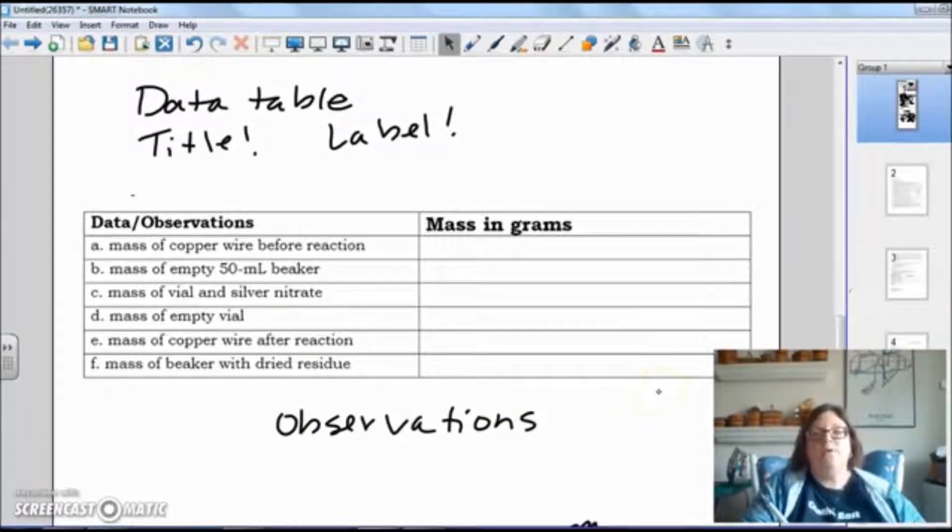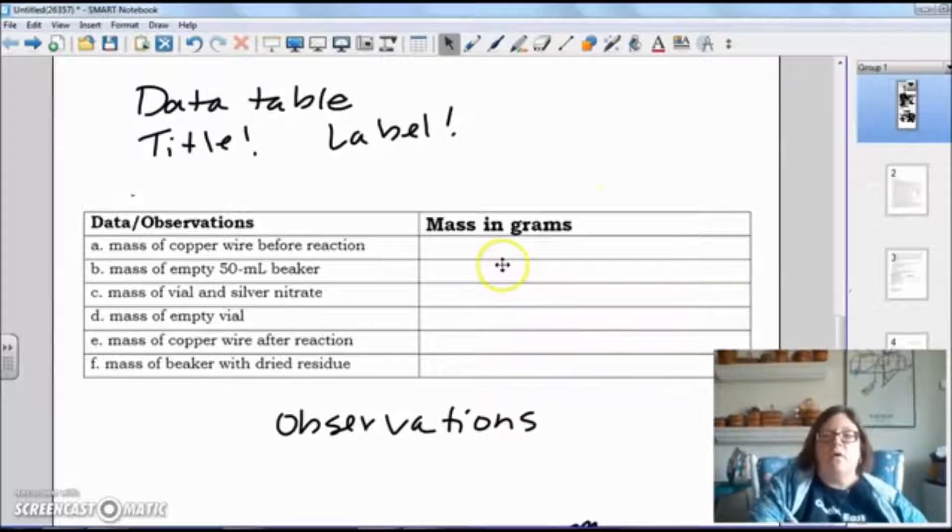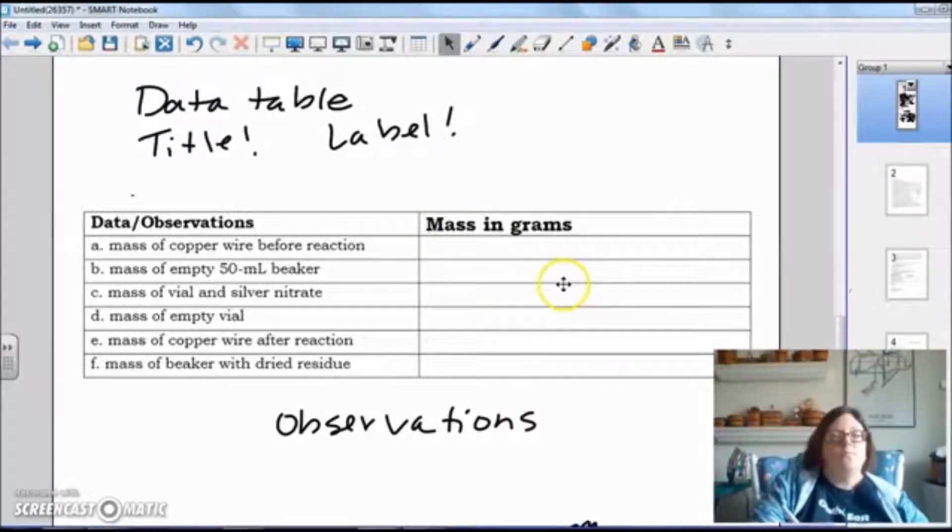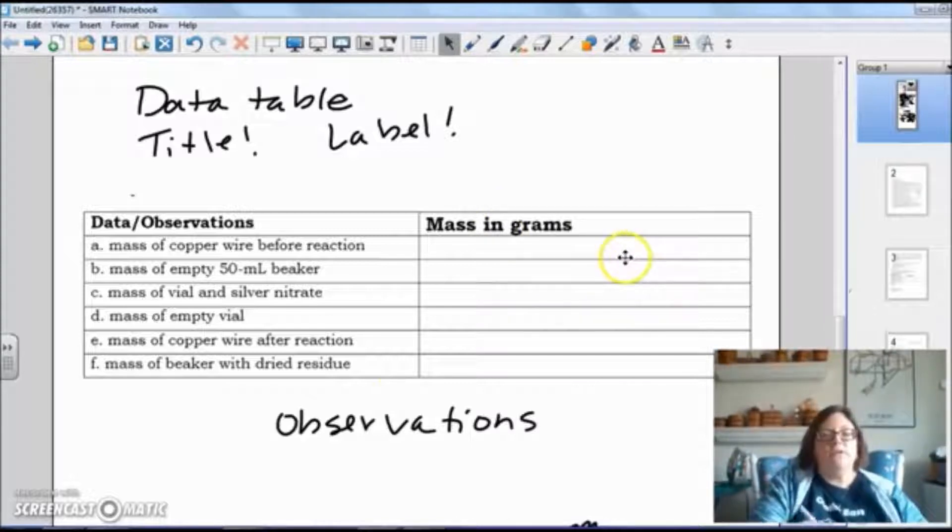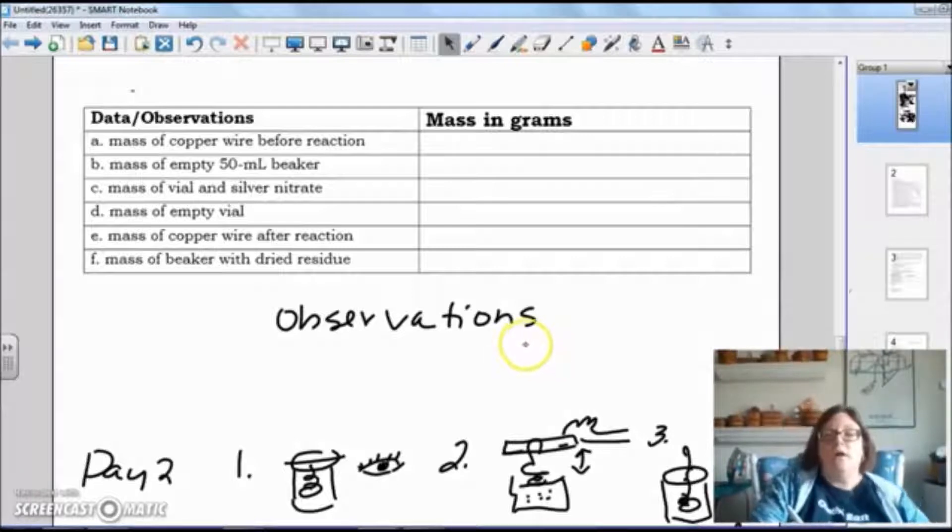I want you to copy this data table into your lab notebook. Make sure you have a large enough space that you can write. Make sure you put your name and title, or put your title and the observations on the top. Underneath that, you need to have a space for observations because when you are done on Wednesday, when you come back in, first thing you're going to do is write down what do you see in the beaker.